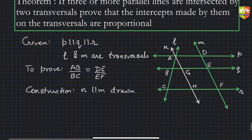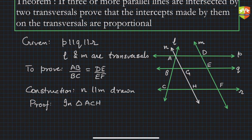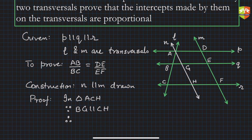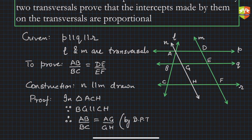Now you can see triangle ACH appearing. In triangle ACH, since BG is parallel to CH, by the Basic Proportionality Theorem we can write AB/BC = AG/GH. Now, if we can prove that AG/GH = DE/EF, the proof is complete.